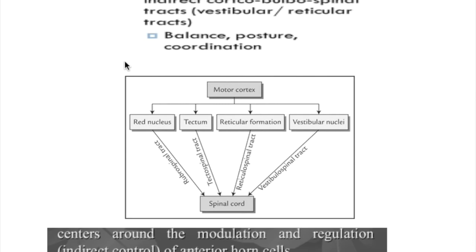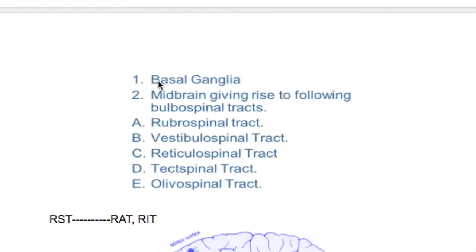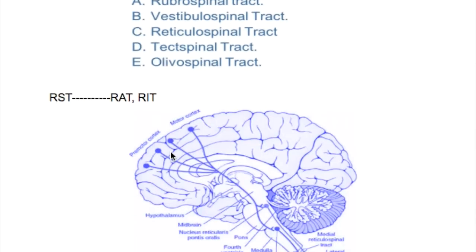The functions of the extrapyramidal neurons include balance or posture, proprioception, and coordination. The extrapyramidal neurons include the basal ganglia, rubrospinal, reticulospinal, vestibulospinal, tectospinal, and olivospinal tracts.